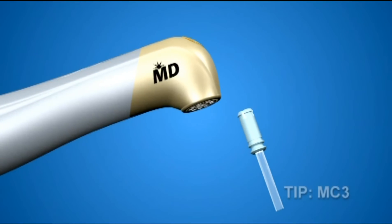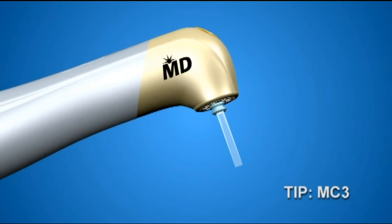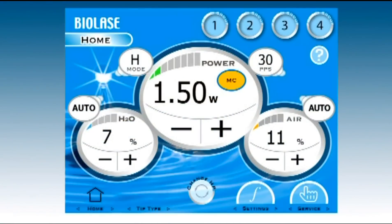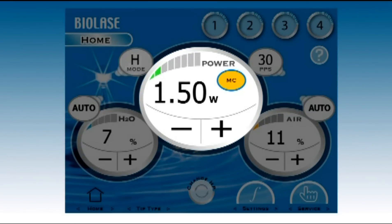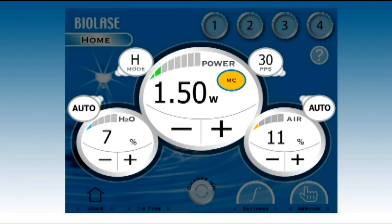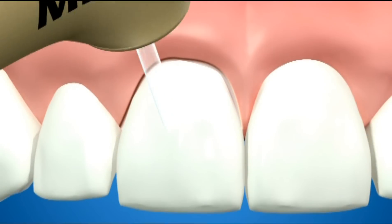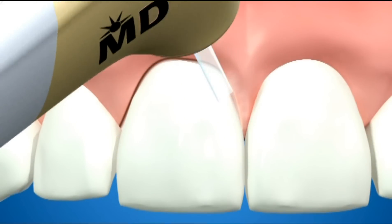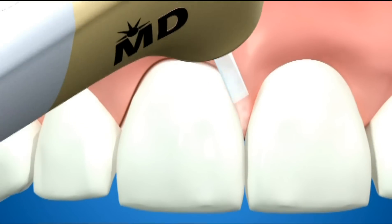Then, taper and smooth the tissue using the MC3 tip. Set power to 1.5 watts, pulse mode to H, frequency to 30 hertz, air to 11% and water to 7%. Apply the widest edge of the tip and use a short brushing stroke to adjust and shape the tissue.